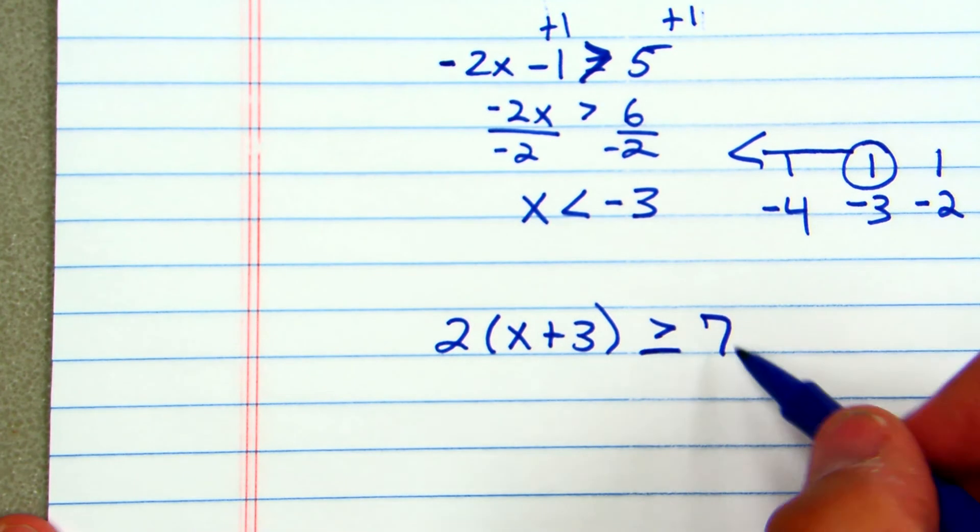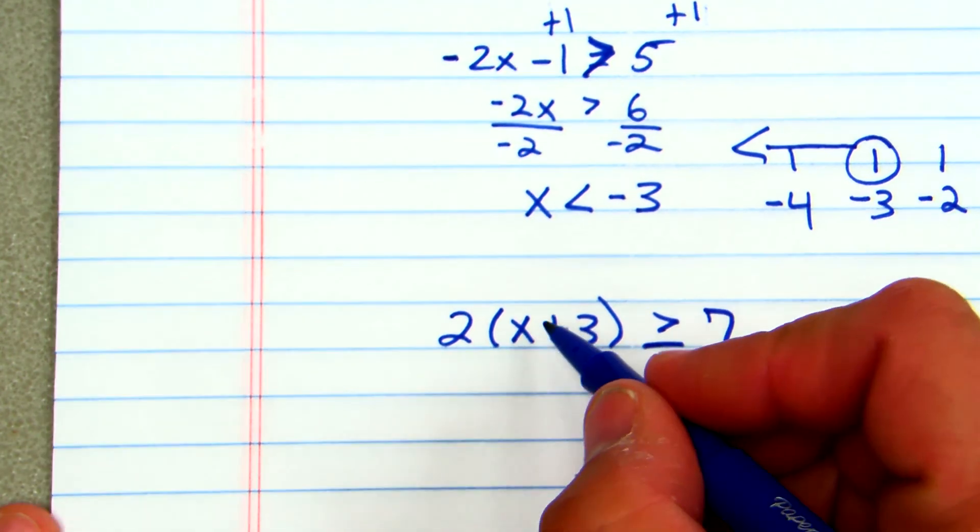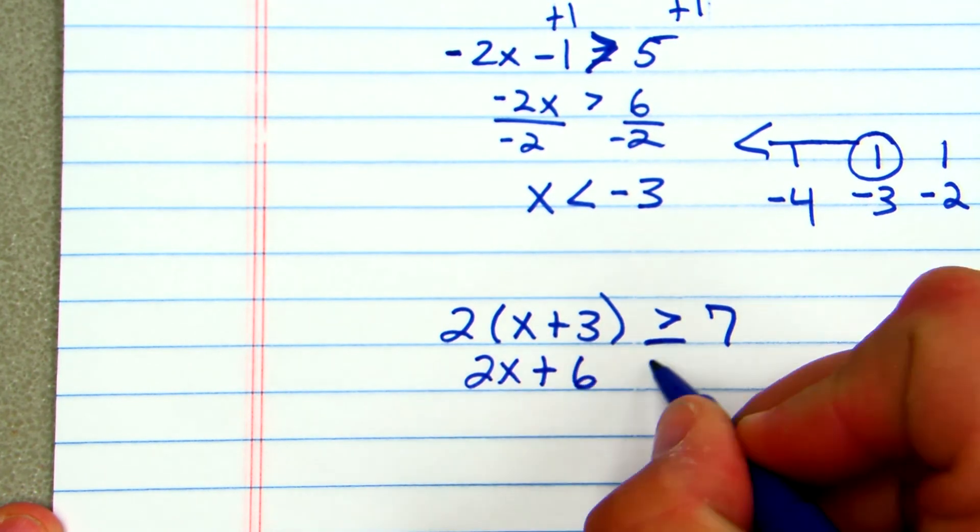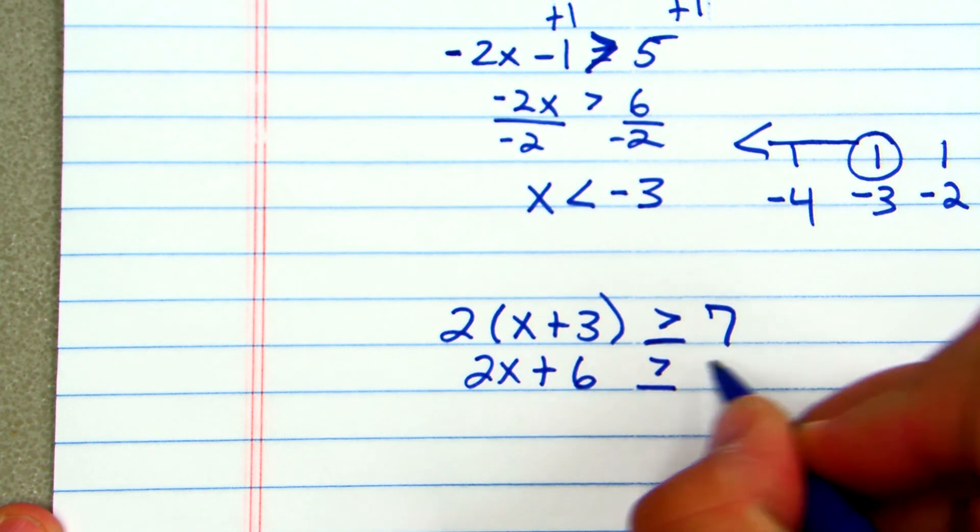All right, so what I'll do then is, first of all, I'll distribute. So I'll have 2x plus 6 is greater than or equal to 7.